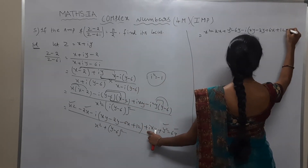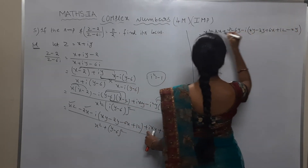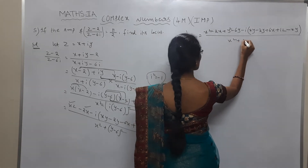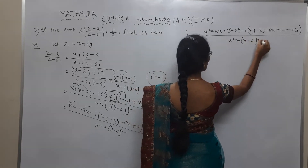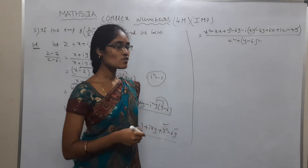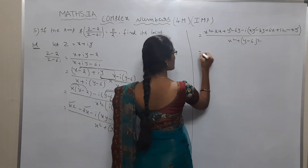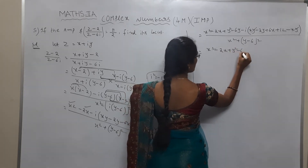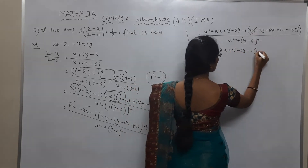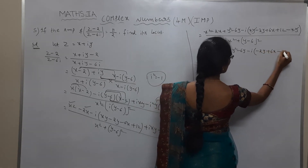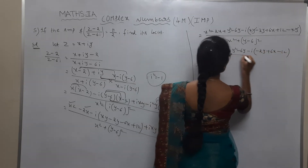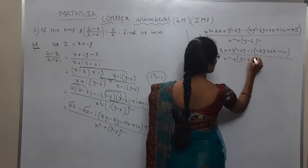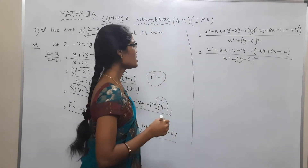Taking minus as common: minus 6y. The xy terms cancel, so the remaining value is x squared minus 2x plus y squared minus 6y, minus i into (minus 2y plus 6x plus 12), all divided by x squared plus (y minus 6) whole squared.